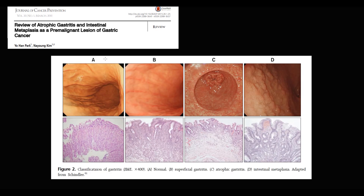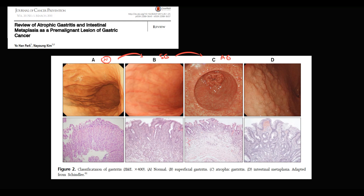Here we can see how atrophic gastritis progresses. Initially we have normal mucosa; then superficial gastritis develops; then superficial gastritis progresses to atrophic gastritis, where we see a decreasing quantity of glands and changes in the gastric epithelium. The last stage is intestinal metaplasia, where the stomach's mucous membrane begins to look like intestinal mucosa.